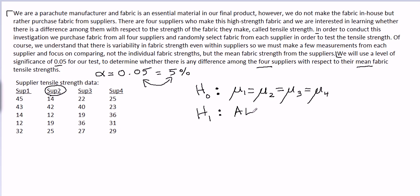Equals mu three equals mu four, and I'm done. So I'm saying that all four of these suppliers have the same tensile strength. I want to ask that question. So my null hypothesis will start by assuming that.